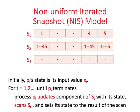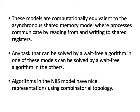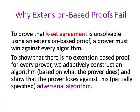The second time a process accesses a snapshot object, it scans and sets its state to the result of the scan. The model is called non-uniform since processes can terminate at different rounds. The non-uniform iterated immediate snapshot model is almost the same, except it uses a sequence of immediate snapshot objects, where each process performs a single update-scan operation. Note that an immediate snapshot object is non-linearizable. These models are computationally equivalent to the asynchronous shared memory model with registers: any task solvable by a wait-free algorithm in one model can be solved in the others.